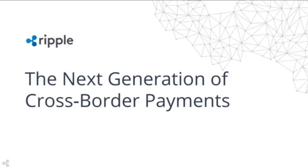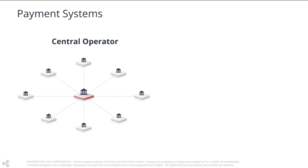When we think about payment systems we've had in the past, they're generally centralized systems — systems where there's one central operator in the middle. That central operator, seen here on the slide as the red entity in the middle of the circle, will hold and manage the ledger. It keeps track of all the accounts of the participants in that network, who's paying who, and is the central authority for the payments that flow through that network.